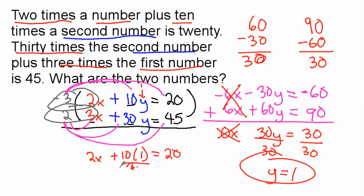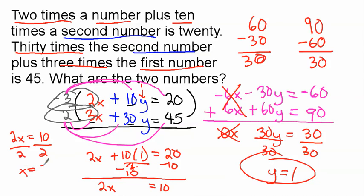Subtract 10 from both sides. And we're going to have 2x equals 10. And I'm going to rewrite it over here, so we have more room. 2x equals 10. We're dividing both sides by 2. And x equals 5.